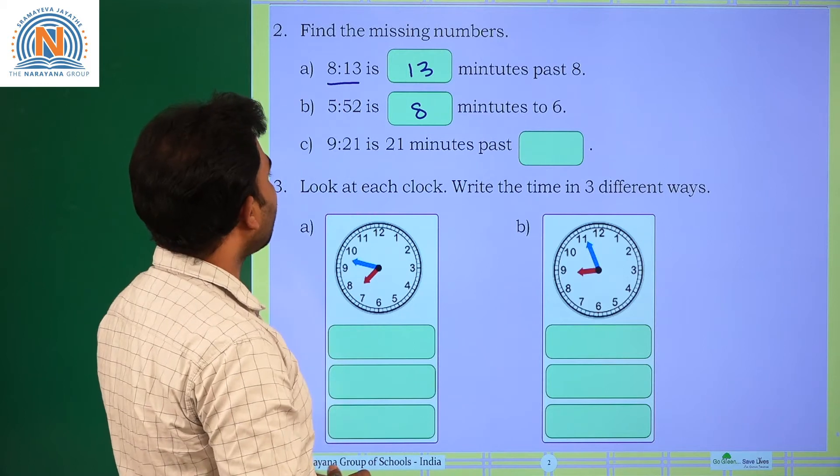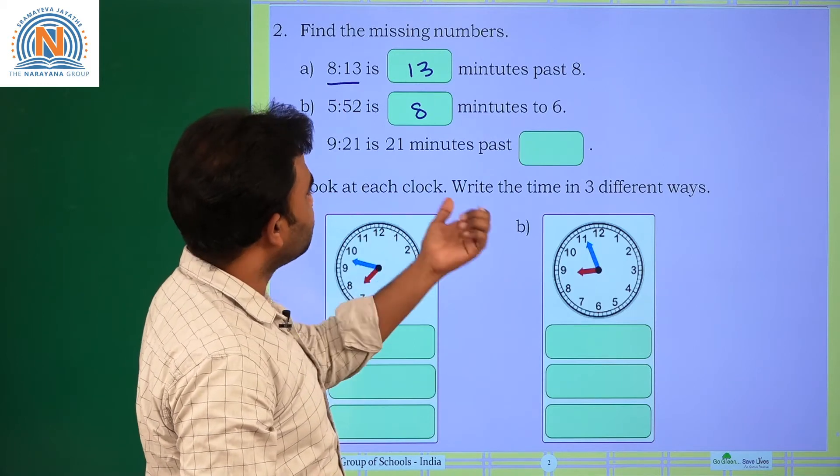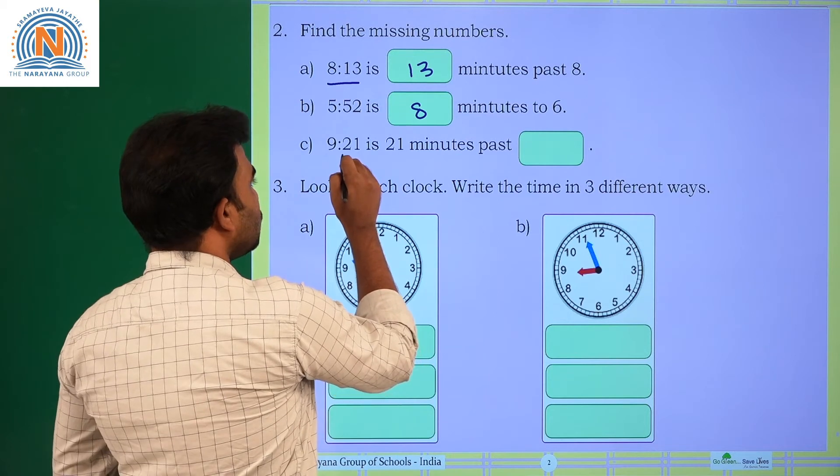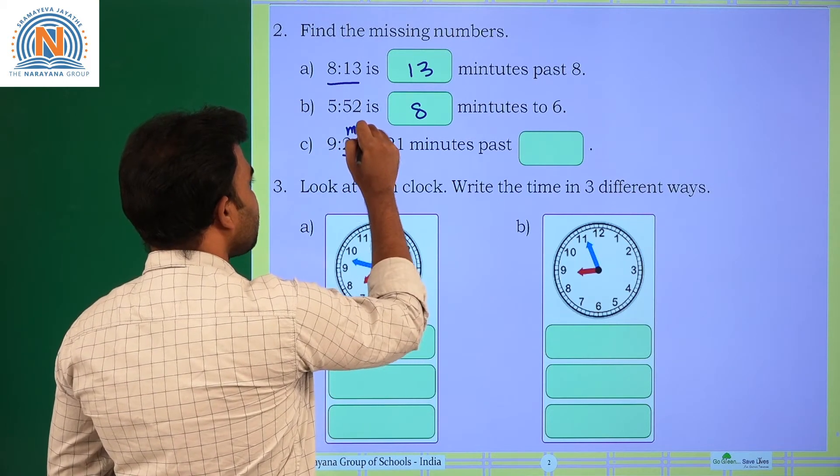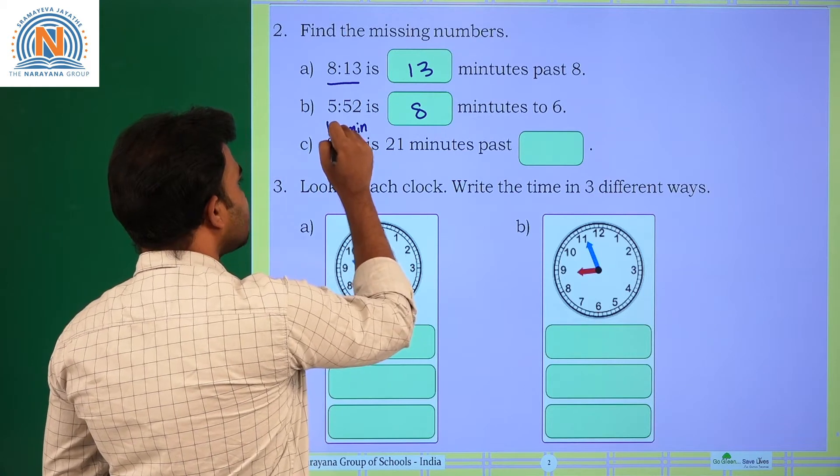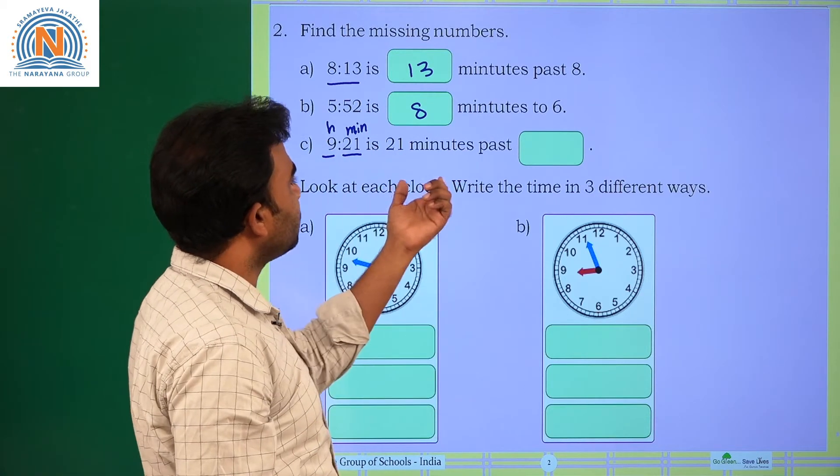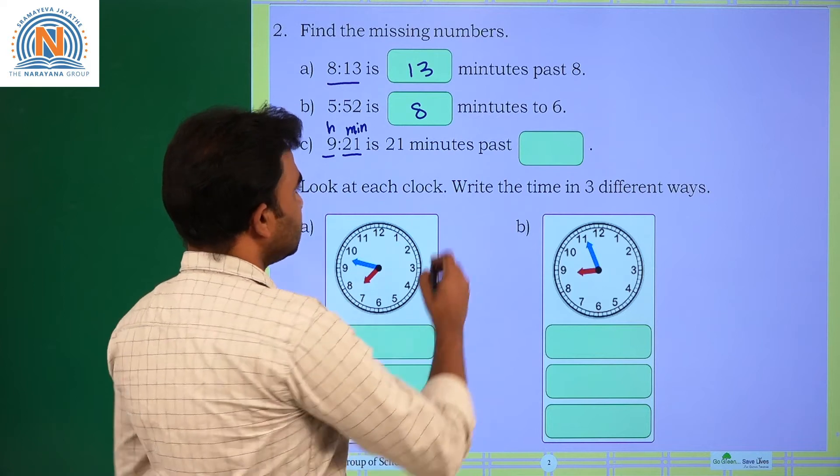Next one, 9:21 is 20 minutes past dash. Here 21 indicates minutes and 9 indicates hours. So, that can be 21 minutes past 9.